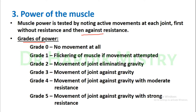We divide muscle power into five different grades. Grade zero: no movement at all. Grade one: flickering of muscle when movement is attempted. Grade two: movement of joint eliminating gravity. Grade three: movement against gravity. Grade four: movement against gravity with moderate resistance. Grade five: movement against gravity with strong resistance.